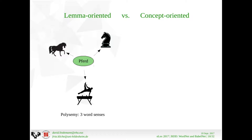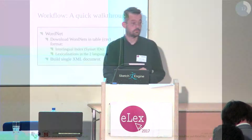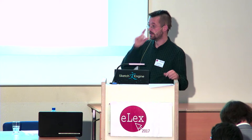In a lemma-oriented resource we see, for example, three word senses for the German lemma 'Pferd', and on the other side three German synonyms that are lexicalizations of one of the concepts shown, along with lexicalizations in other languages. By extracting data from concept-oriented resources we can draw sense-to-sense mappings, which is what we want to do. So how do we get our data from WordNet and from BabelNet?